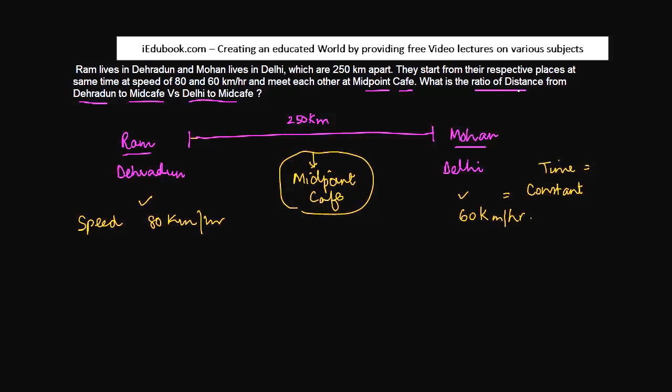What is the ratio of distance from Dehradun to mid cafe? You are told to find out the ratio between this distance versus this distance. Now you know that distance is equal to speed into time. If time is constant, then the ratio of distance has to be same as the ratio of speed.